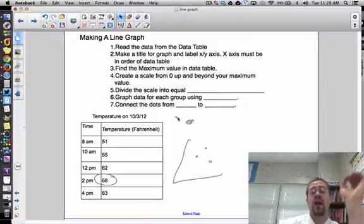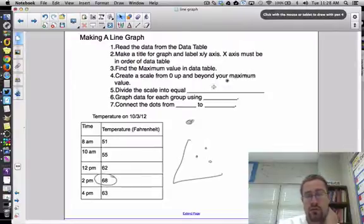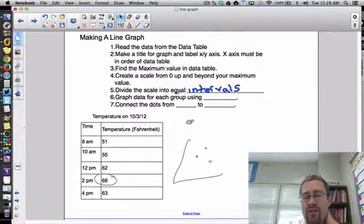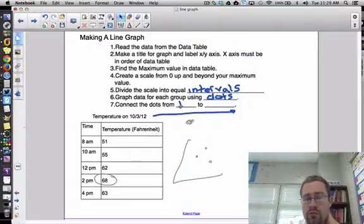So what I want to do is I want to think about when I'm creating my scale, I want to divide the scale into equal, they're called intervals. Intervals is spaces between either numbers or values. And this is in your notes. Each graph data for each group using dots. We're not drawing lines yet. We're just drawing the dots where the data meets. And then we're going to connect the dots from left, which is over here, to right. Left to right.